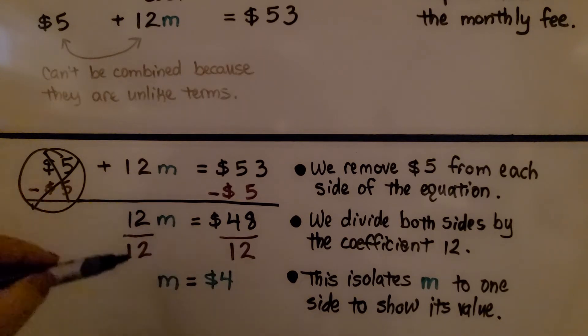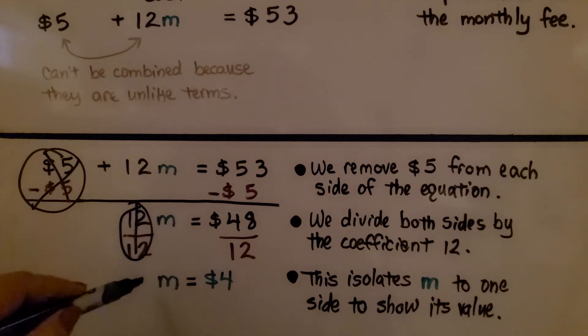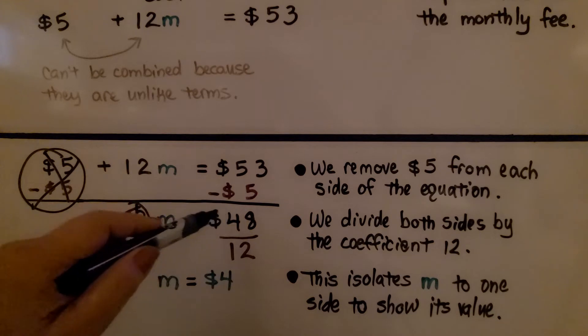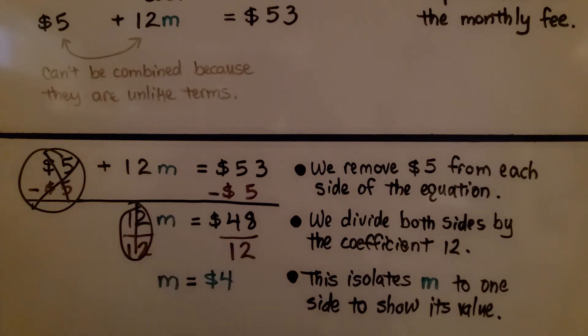We divide this side by 12 and we divide this side by 12. This has the same numerator and denominator as a fraction, so this entire thing is just a 1. So we have 1M, but we don't have to write that 1. And $48 divided by 12 is $4. This isolates M to one side to show its value. We know it's $4 a month.